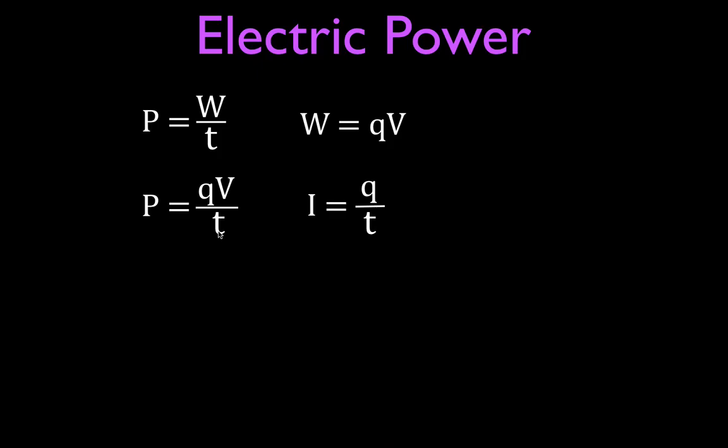We can get out our equation for the current, because the current is the coulombs, the amount of charge per second that passes a given point in the circuit. Solve that for Q. Q is now equal to I times T, and substitute that into our equation. Now we have power is equal to the current times the time times the voltage divided by the time. Those two times are the same, they cancel, and this is the most common equation you'll see for electric power. It says that the power is equal to the current times the voltage.